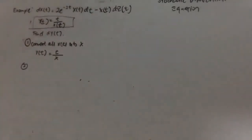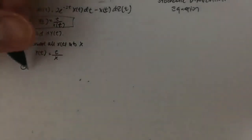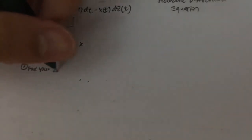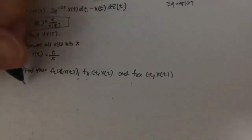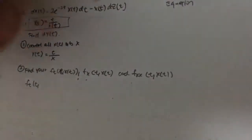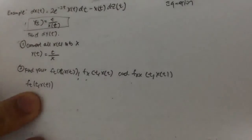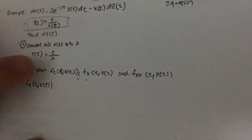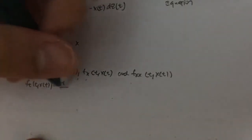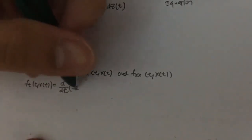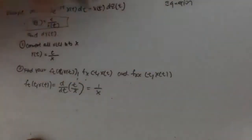Next, find your ft(xt), fx(xt), and fxx(xt). So what does ft mean? It means you take yt and differentiate with respect to t. So it means differentiate t over x with respect to t, and that gives you 1 over x.